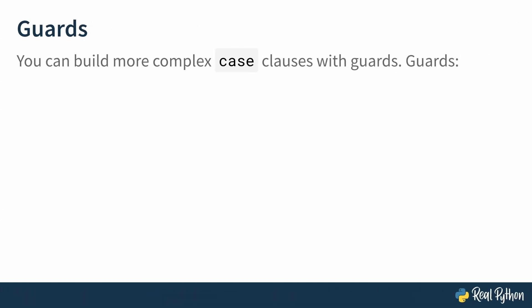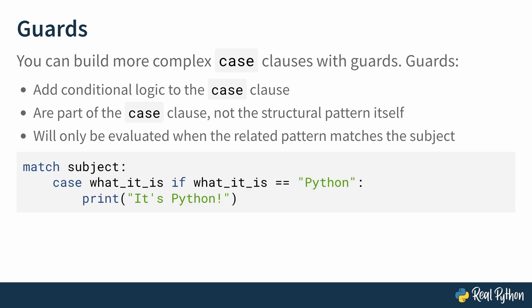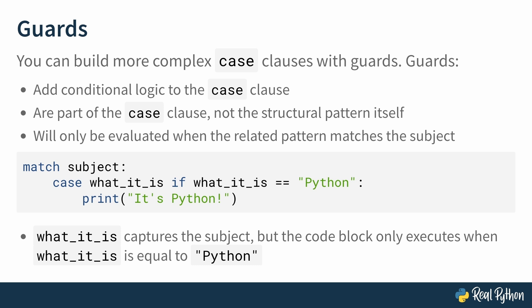Speaking of guards, you can build even more complex case clauses by using guards. Guards add conditional logic to the case clause. They're part of the case clause and not part of the structural pattern itself. In fact, guards will only be evaluated when the related pattern matches the subject. Here's an example. Match subject. Case, what it is, if what it is equals the string Python. Then print, it's Python. What it is captures the subject, but the code block only executes when what it is is equal to the string Python. The if condition is the guard. I'll admit, these examples are simple and a little silly. But now you're ready to open up your IDE and get started on using these patterns to improve your REPL.